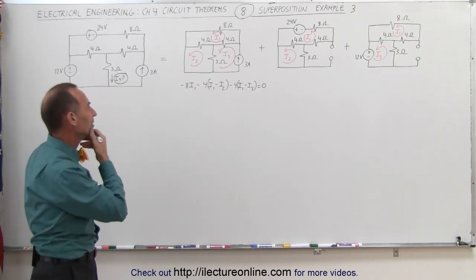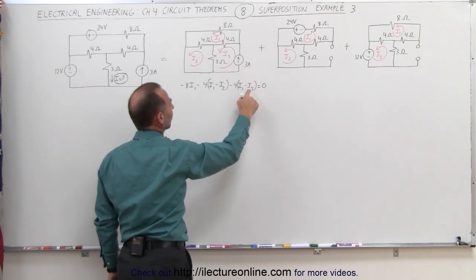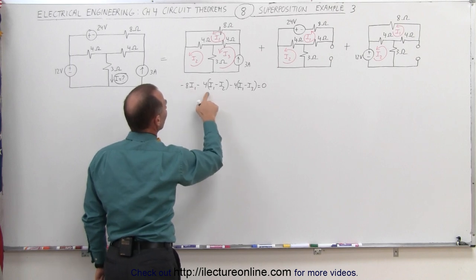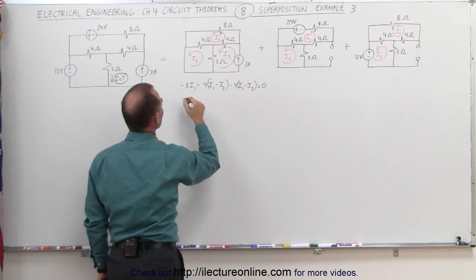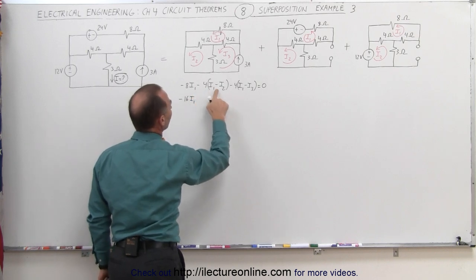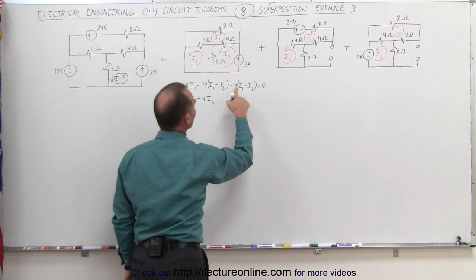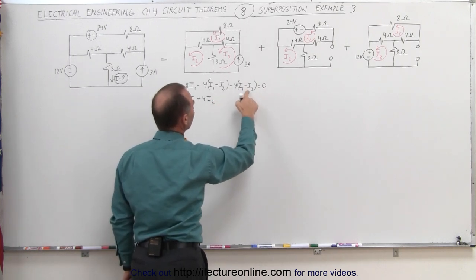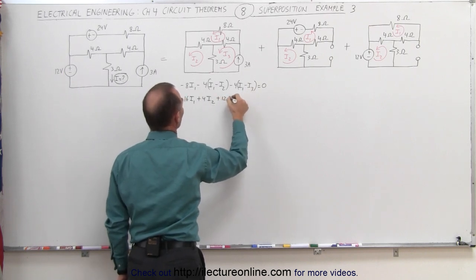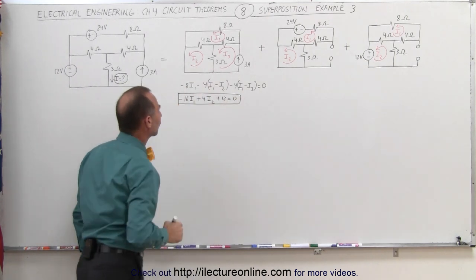Let's simplify things first. We know that I3 is equal to three amps, so we can put a three in there and simplify the rest. We have minus 8I1, minus 4, and minus 4 — that's minus 16I1, plus 4I2, and minus 4 times minus 3. Because this negative makes that a negative, that would be plus 12 equals zero. Here's our first equation in this first circuit.